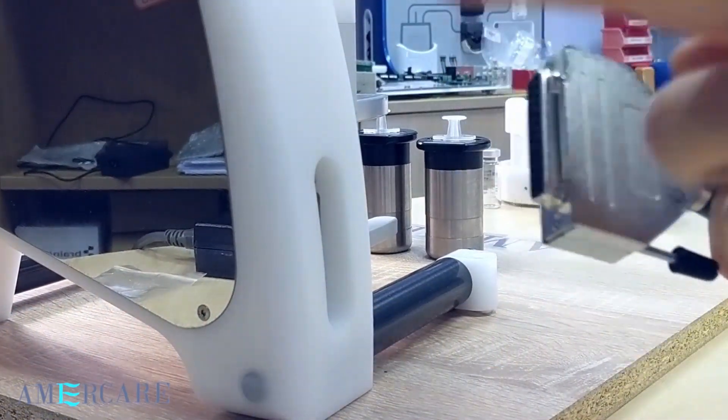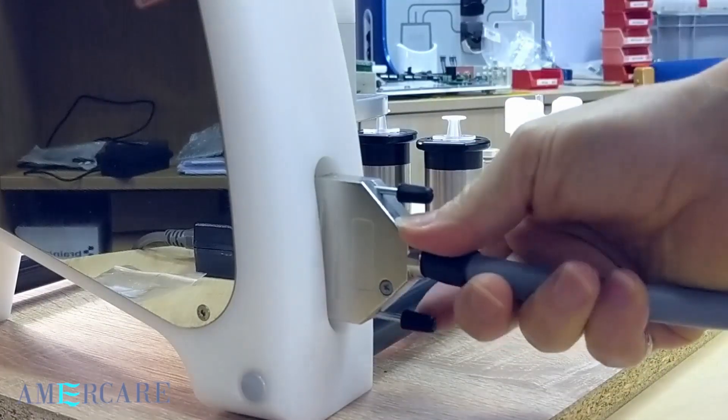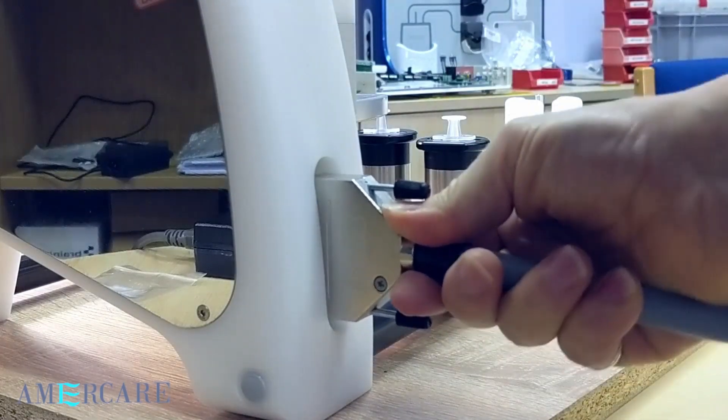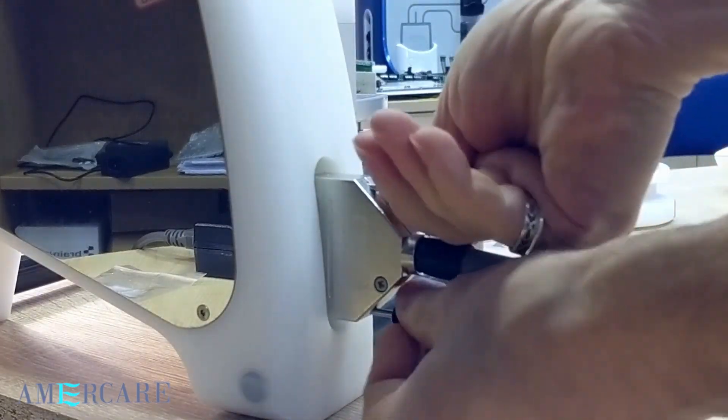At the head end, there is a similar arrangement. The 25-way D connector plugs into the socket. Once again, ensure that the plug and socket are firmly pushed together and secured using the two screws.